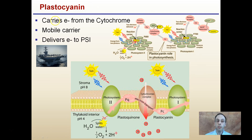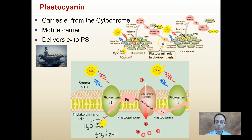Plastocyanin, represented as PC, is a mobile carrier that carries electrons from the Cytochrome complex and delivers them to Photosystem I. Try to remember that it's a mobile carrier — pictured here like an aircraft carrier — moving electrons to the next step.